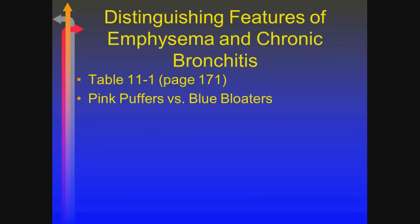I added this slide because I wanted to talk about this process — it's on page 171 in your text. You rarely see someone who strictly has emphysema or strictly has chronic bronchitis; they're going to be basically a blend of the two. But if you did have someone with strict emphysema, they present differently than someone with chronic bronchitis. We use the distinction of pink puffer versus blue bloater.